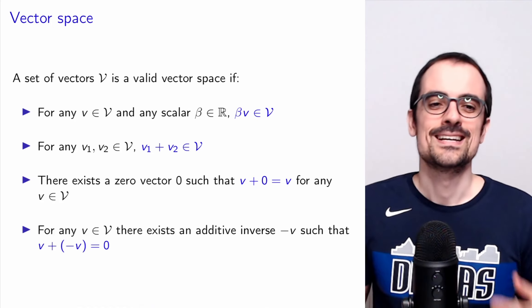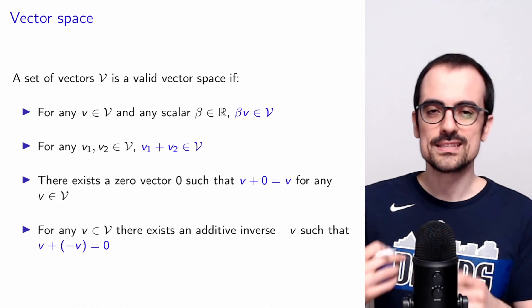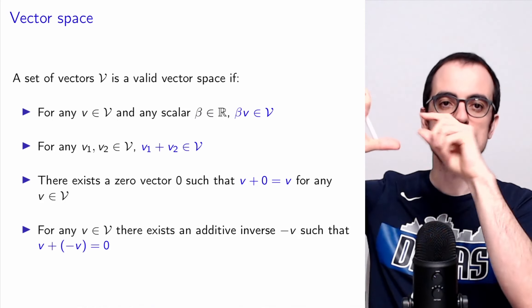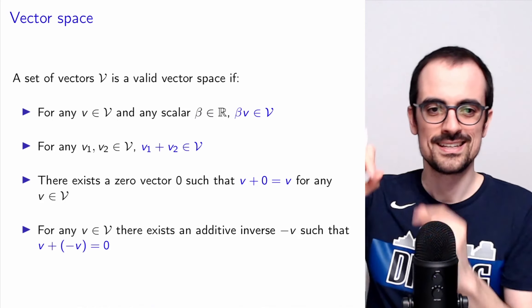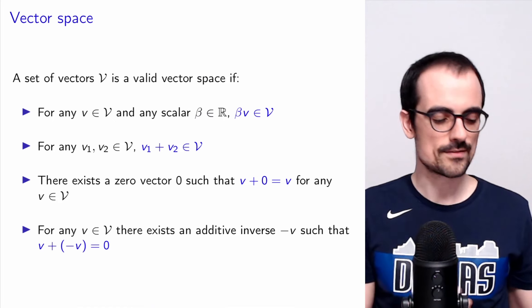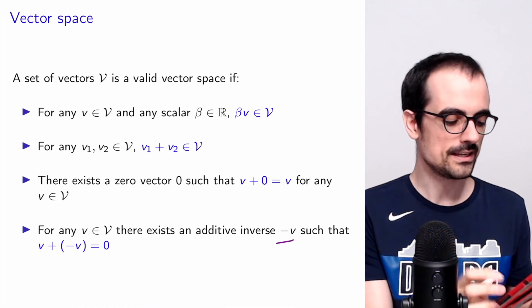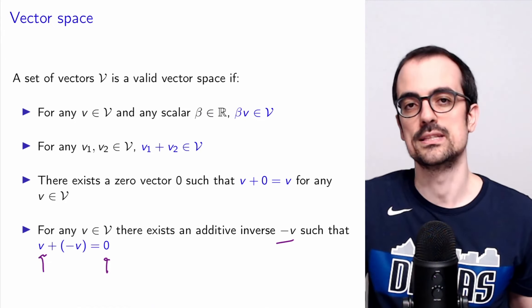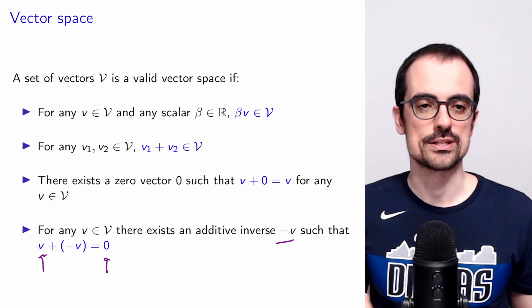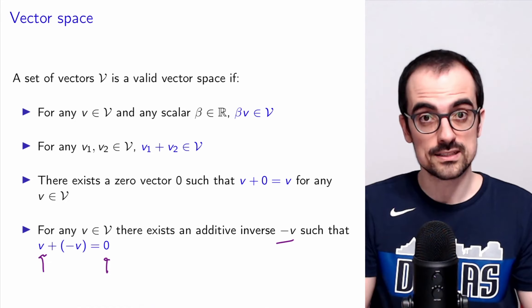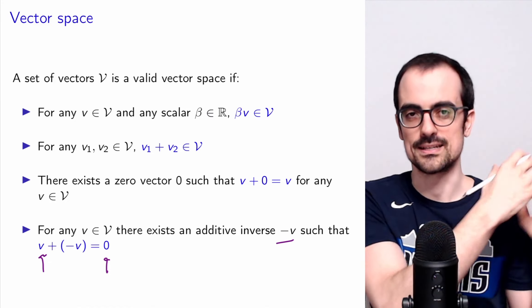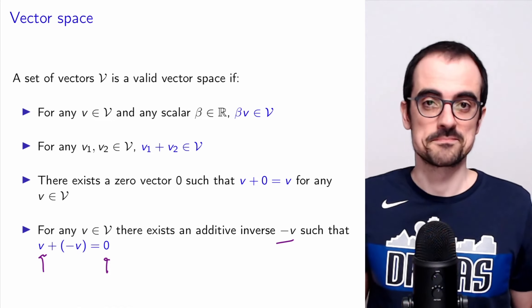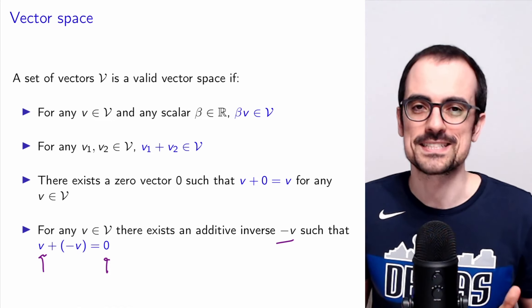There always has to be an inverse, meaning that you can always subtract another vector from a vector to go back to the origin. There's always this inverse, which we call minus V, such that when you add it to a certain vector, you end up with the zero vector. If some set of objects that can be summed and scaled satisfy these conditions, they are a vector space, no matter how weird those objects might be.